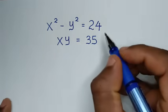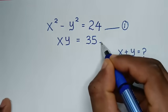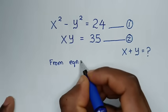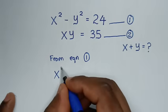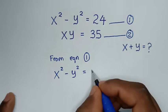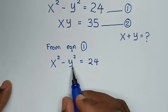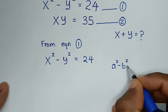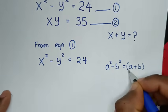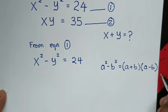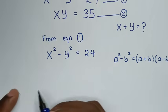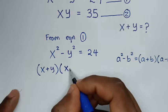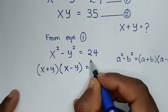In the first step, let's label x² - y² = 24 as equation 1 and xy = 35 as equation 2. From equation 1, x² minus y² is in the form of a² minus b², which equals (a + b)(a - b). So we apply this form: x² - y² becomes (x + y)(x - y) = 24.